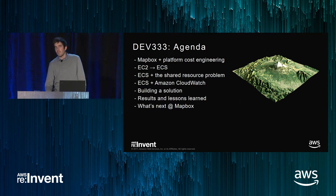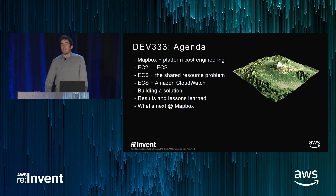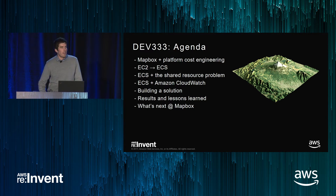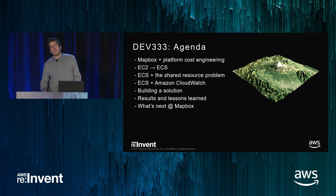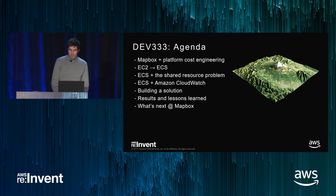We'll talk through our move from EC2 to ECS. It really informs how we use ECS at Mapbox, and also why using CloudWatch to monitor it is an interesting problem for us. We'll talk about ECS and the shared resource problem — we use clusters to run multiple applications and multiple teams, all in one cluster. We'll cover how we use CloudWatch on ECS, how we build a solution to figure out the shared resource problem, breaking out discrete costs. And we have some results, some lessons learned along the way — didn't go perfect. Then I'll briefly talk about what's next at Mapbox.